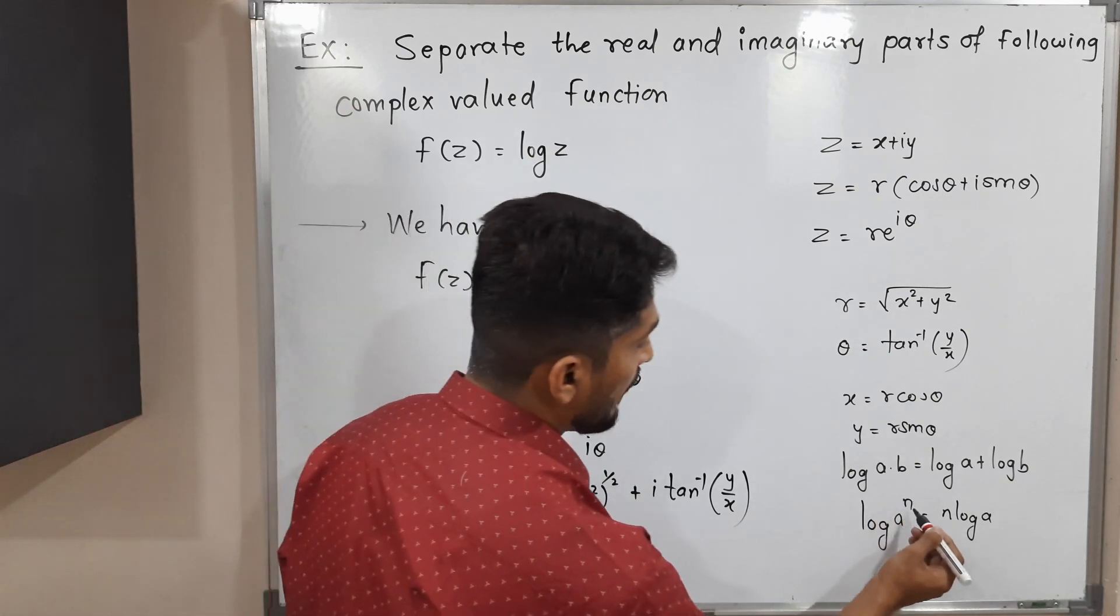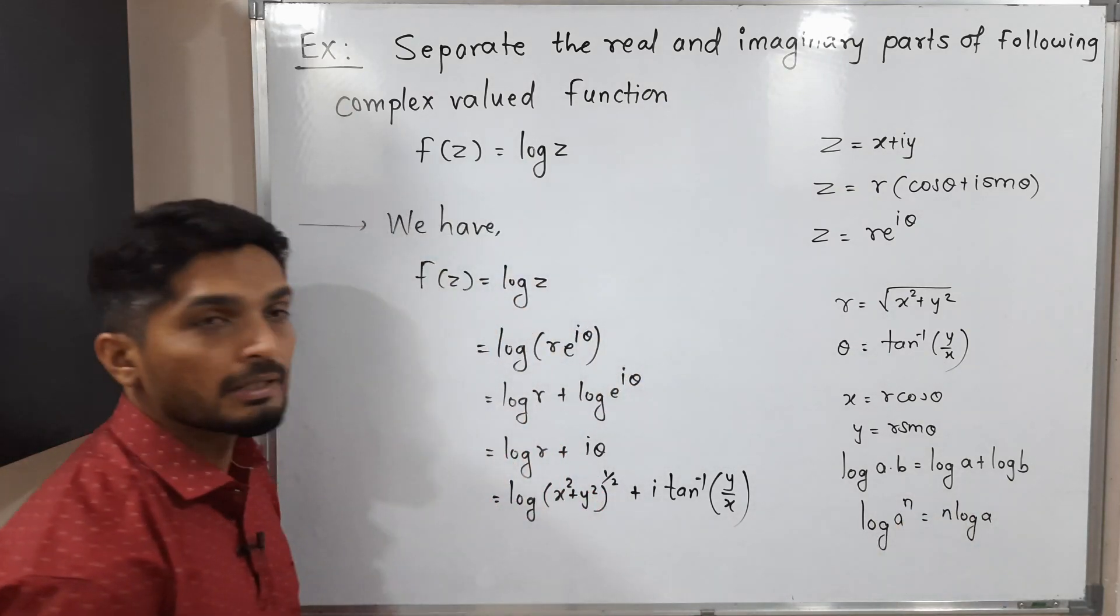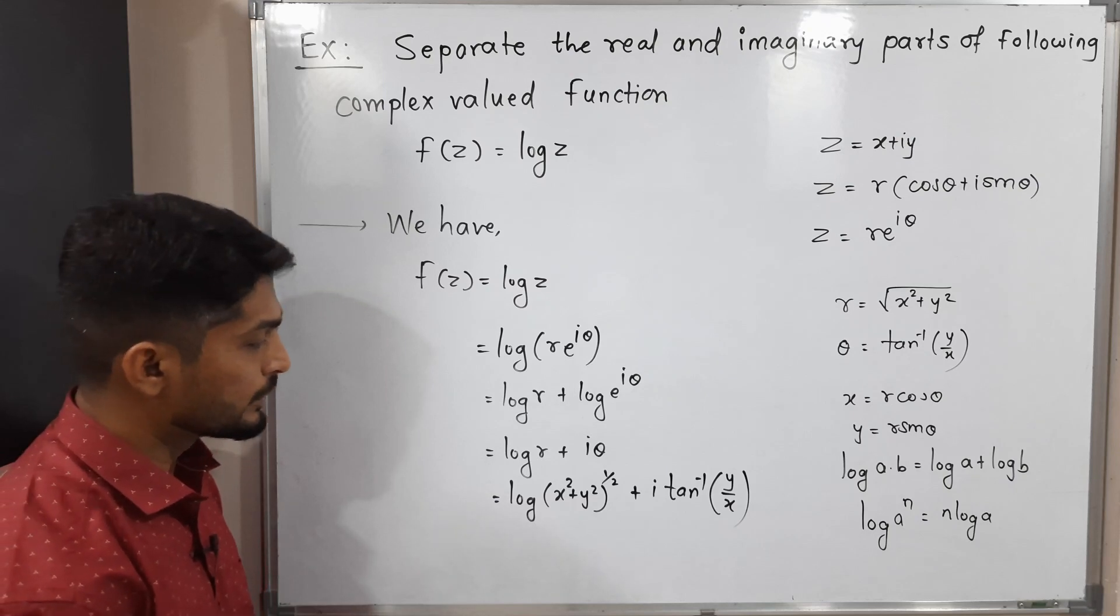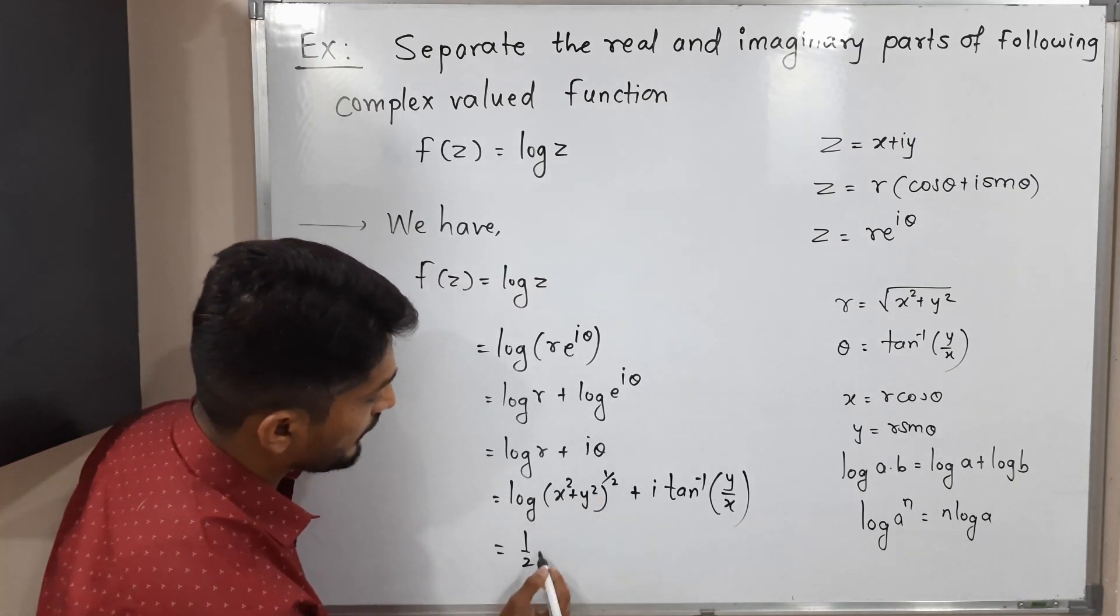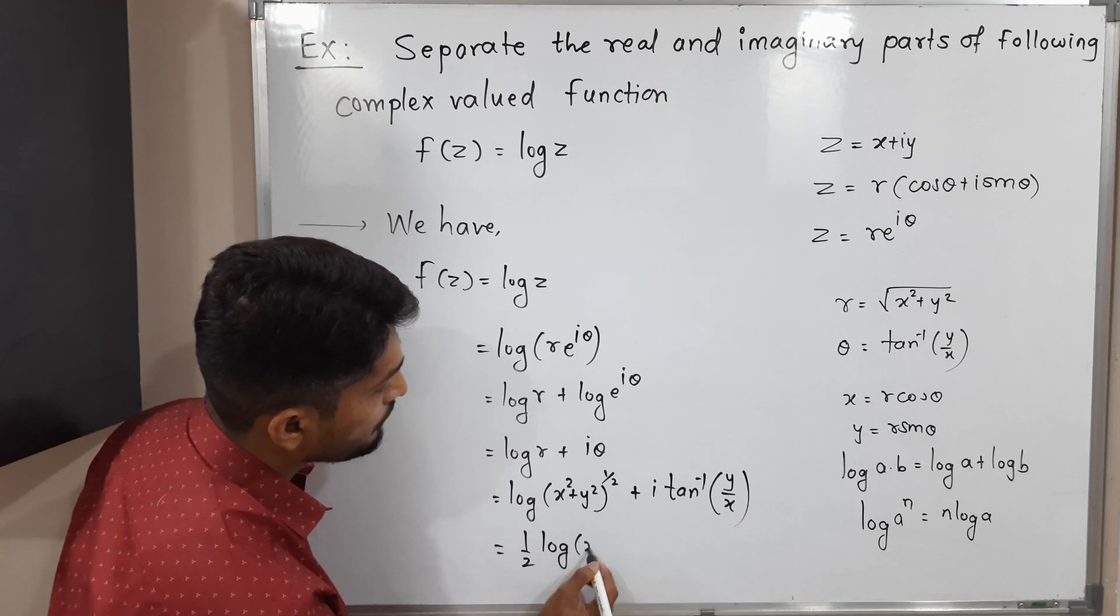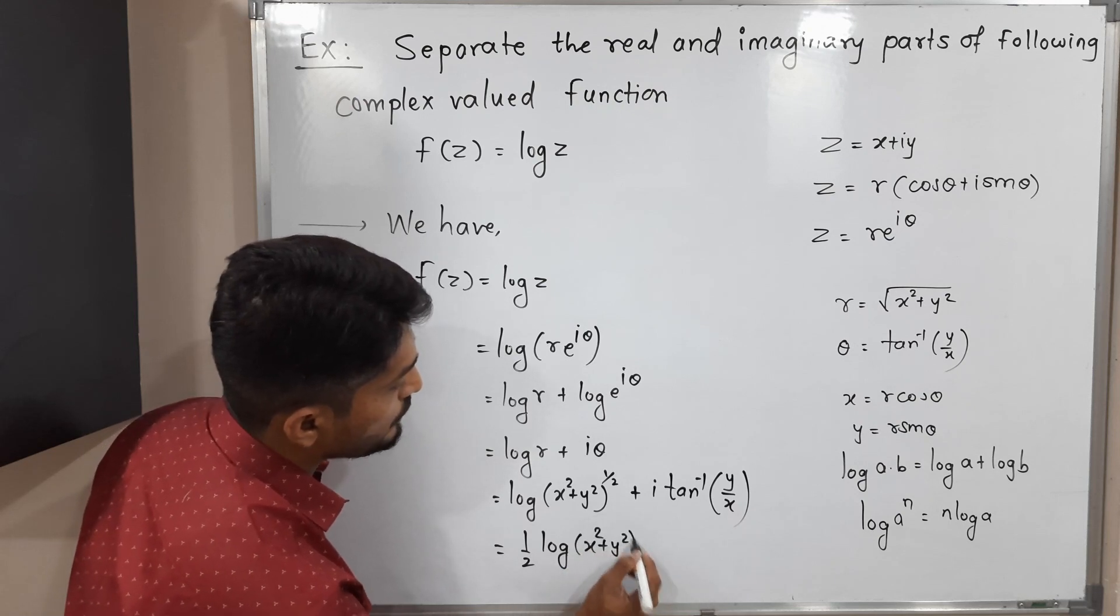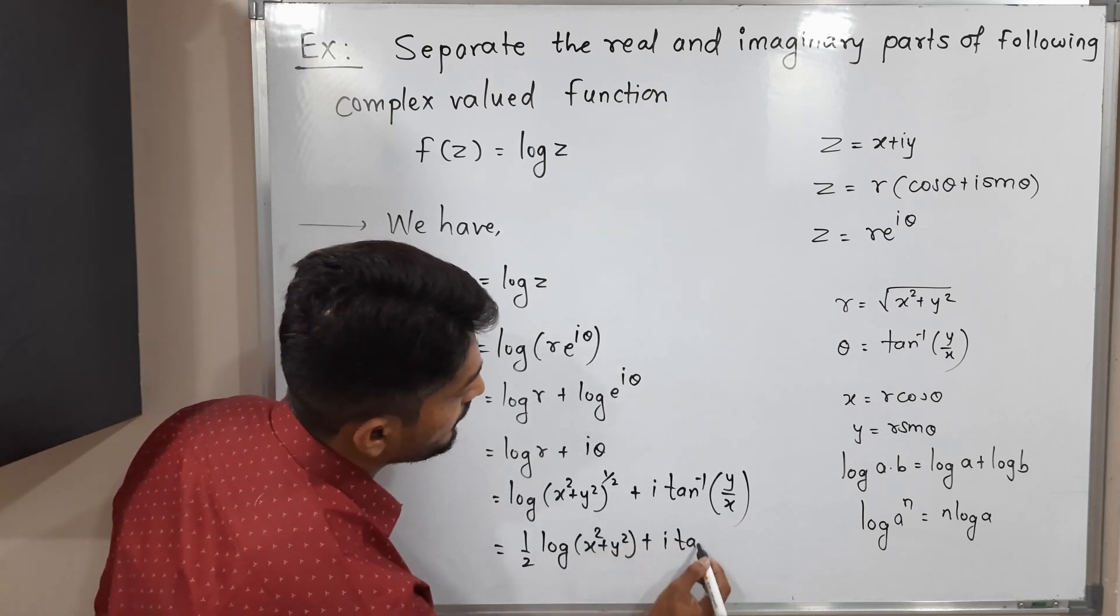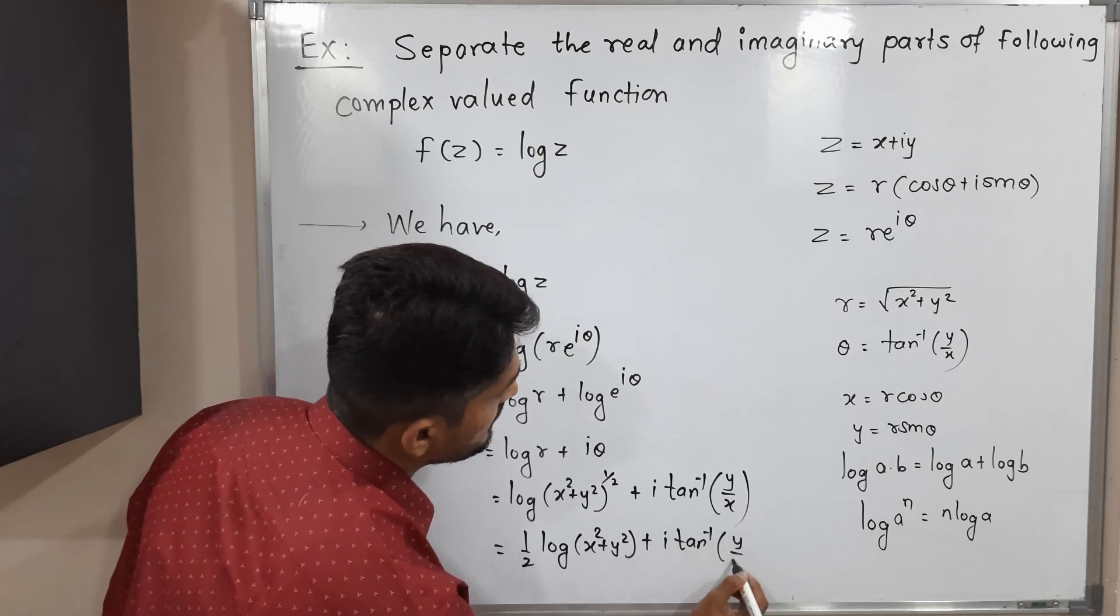This is our a and this is its power. If you have any power here, directly you can write it as a multiple of log. So this is equal to (1/2)log(x² + y²) + i tan⁻¹(y/x).